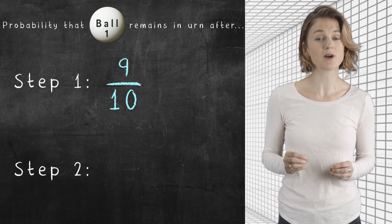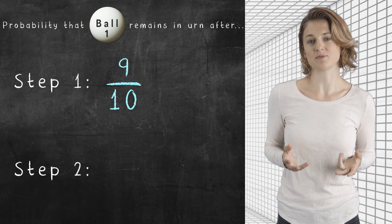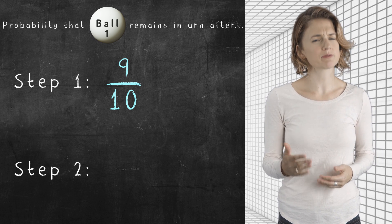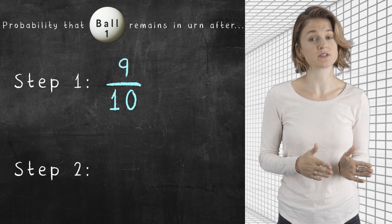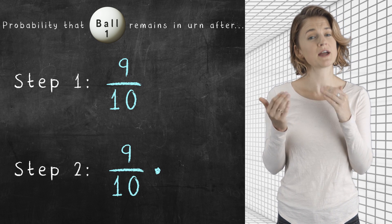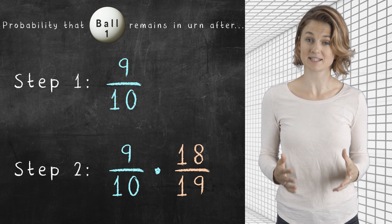What's the probability ball one is still in the urn after step two? That it wasn't removed in step one and wasn't removed in step two? Well, AND statements in probability usually correspond to multiplication. So you take the 9/10ths probability that it wasn't removed in step one and multiply it by 18/19ths, which is the probability that it's not selected in step two.